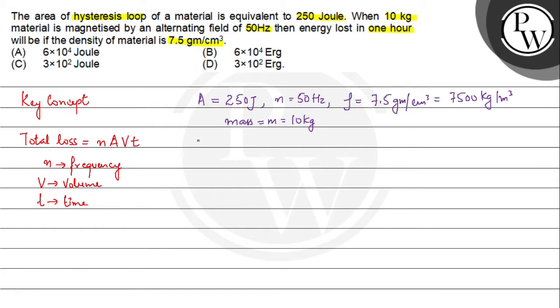We know that volume is mass per density. We can write this as 10 divided by 7500 meter cube, which will be the volume in this case. The total energy loss will be n times A times V times t.